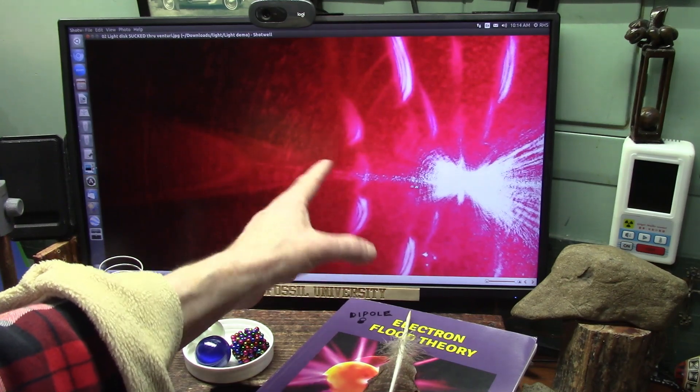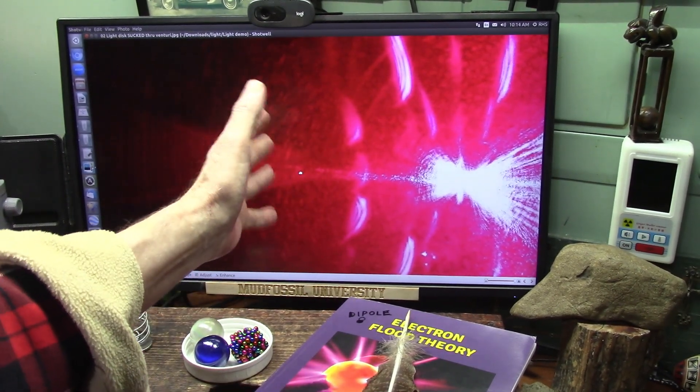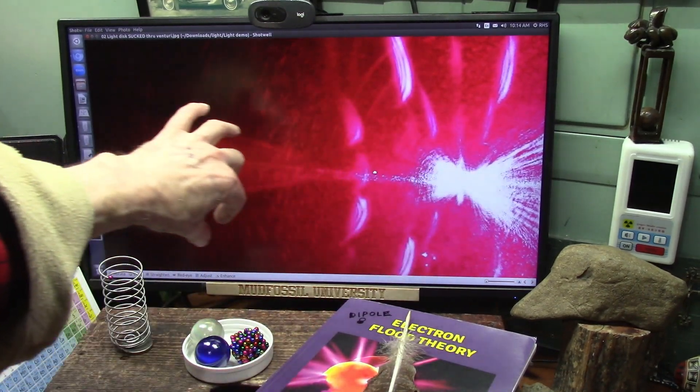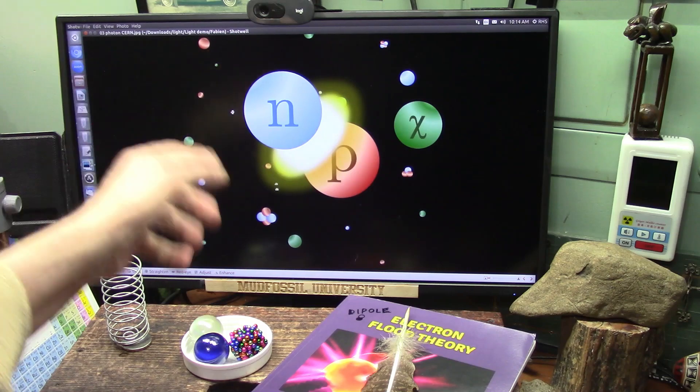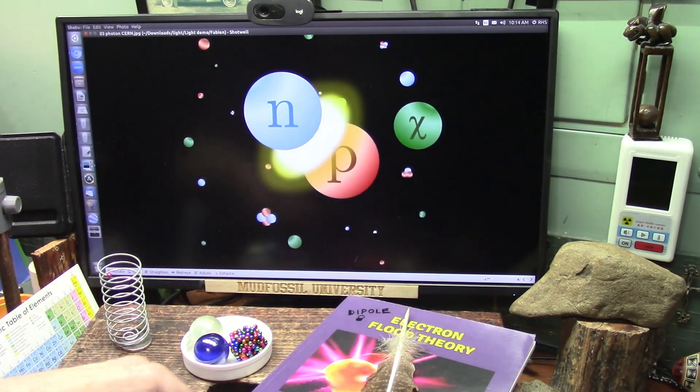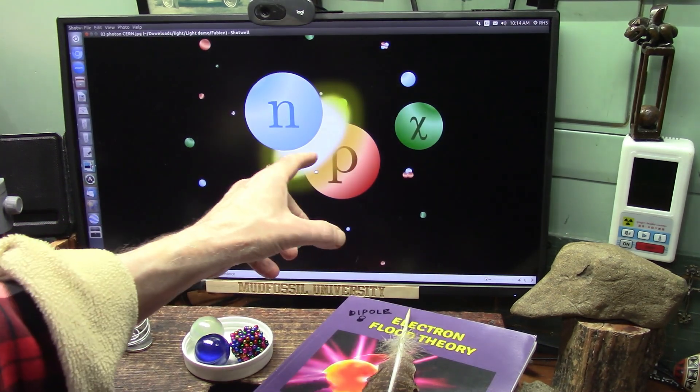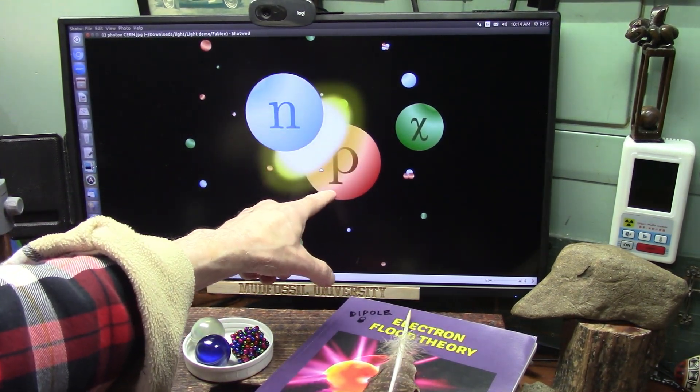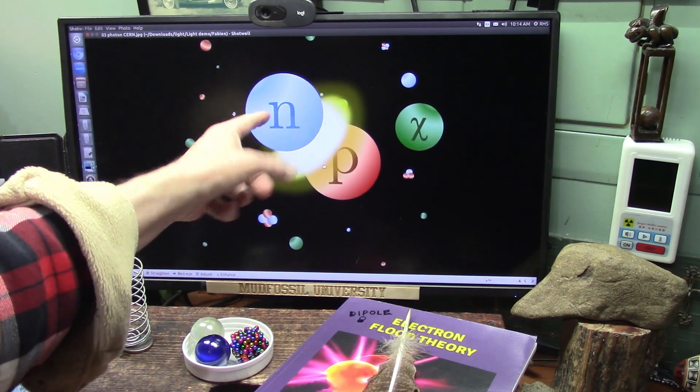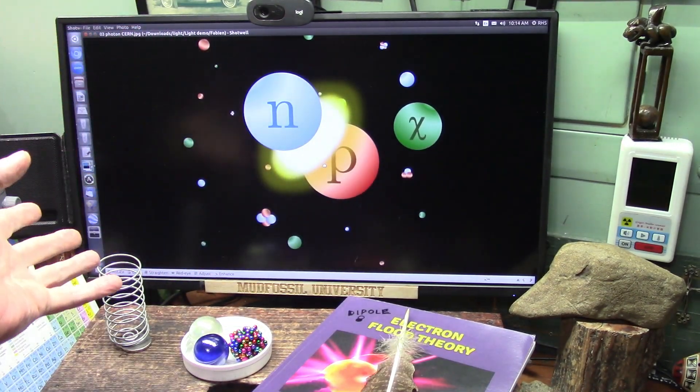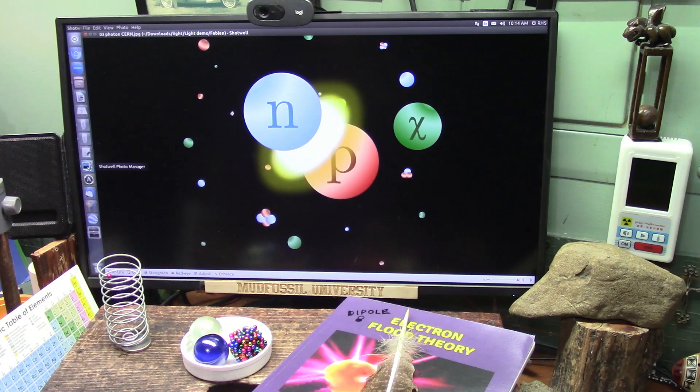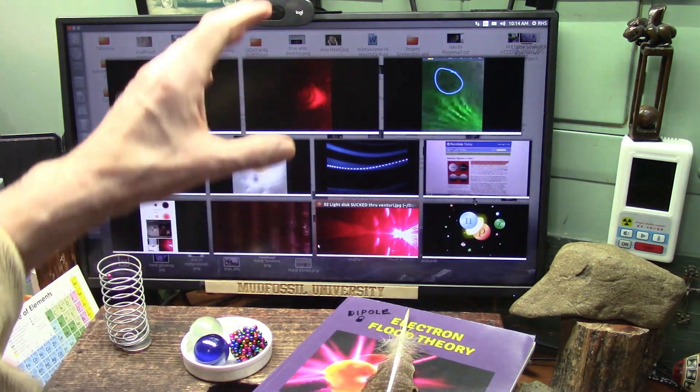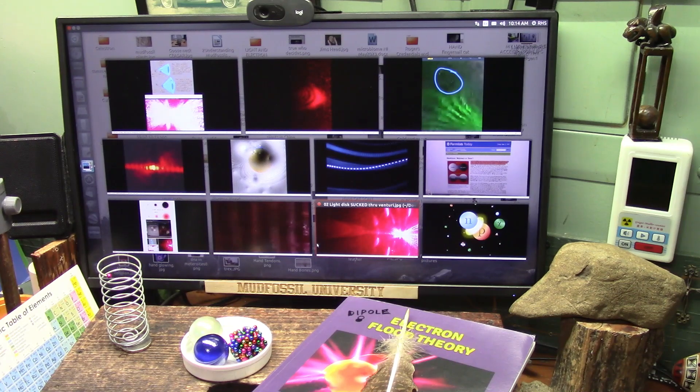Right here it takes on its complete full photon phase. Up to here it's just growing in energy. But here it's compressing against itself as it pushes back. So here it pops up into a photon. This gives you the ability for a neutron to drop down to be a proton. All that has to do is lose one of these little tiny particles and it drops down to be a proton because instead of having 1824 it ends up with 1823. Dipole electron flood theory literally solves everything in physics on the subatomic level.